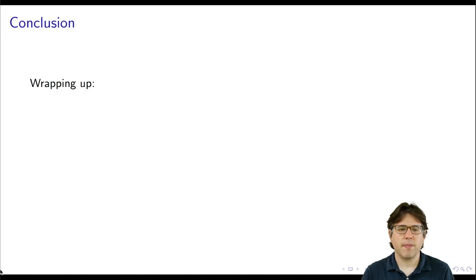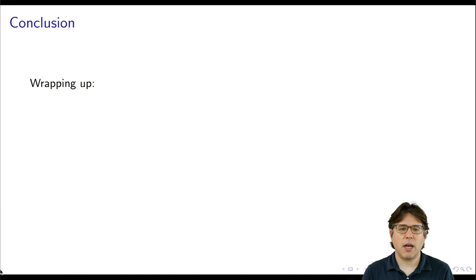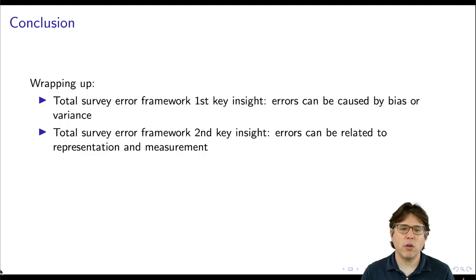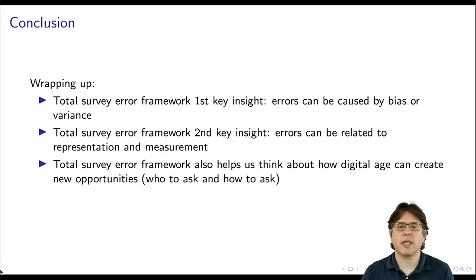Wrapping up this lecture: the total survey error framework's first key insight is that errors can be caused by bias or variance. The second is that errors can be related to representation and measurement — both who you talk to and what you learn from those people. The total survey error framework also helps us think about how the digital age can create new opportunities for who to ask and how to ask, which we'll see more clearly in the upcoming videos. I definitely recommend the book by Robert Groves et al., which is entirely organized around the total survey error framework. This was the first video in a series of five about survey research in the digital age. Thank you.